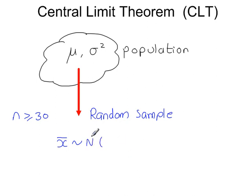And this normal distribution will have a mean identical to the population mean, but the variance needs to be divided by n, the sample size.